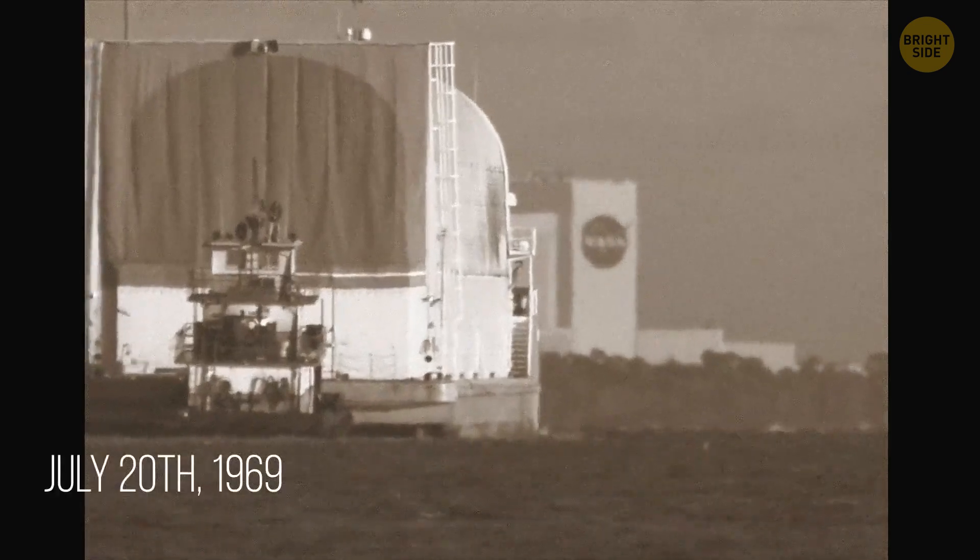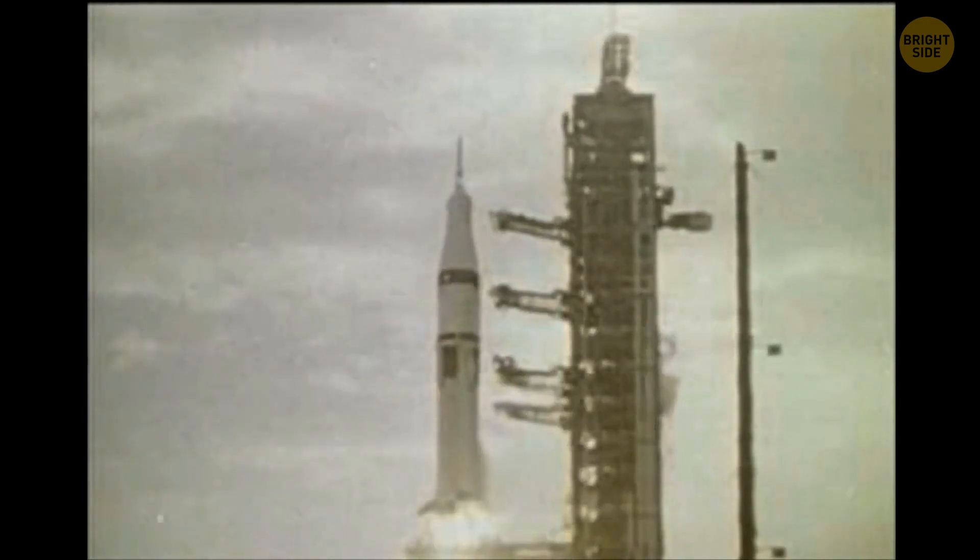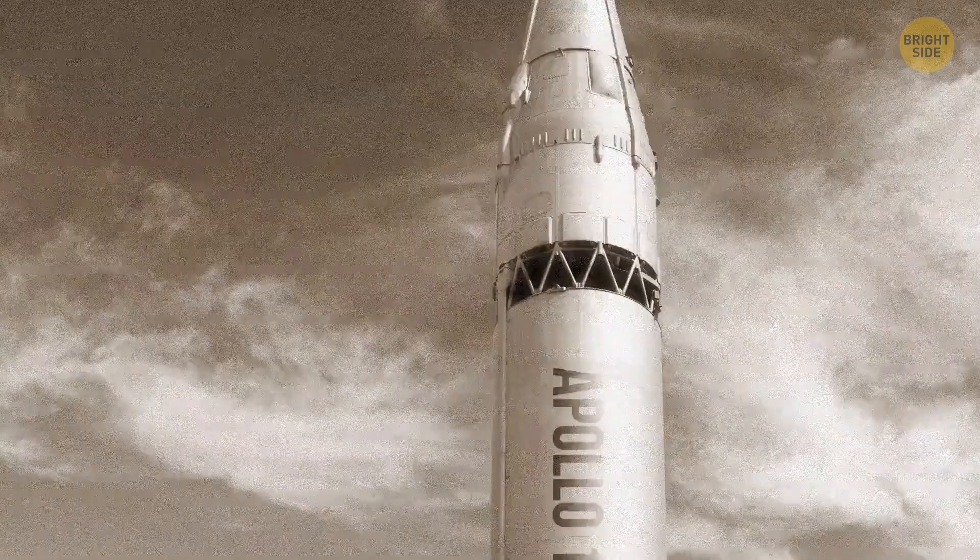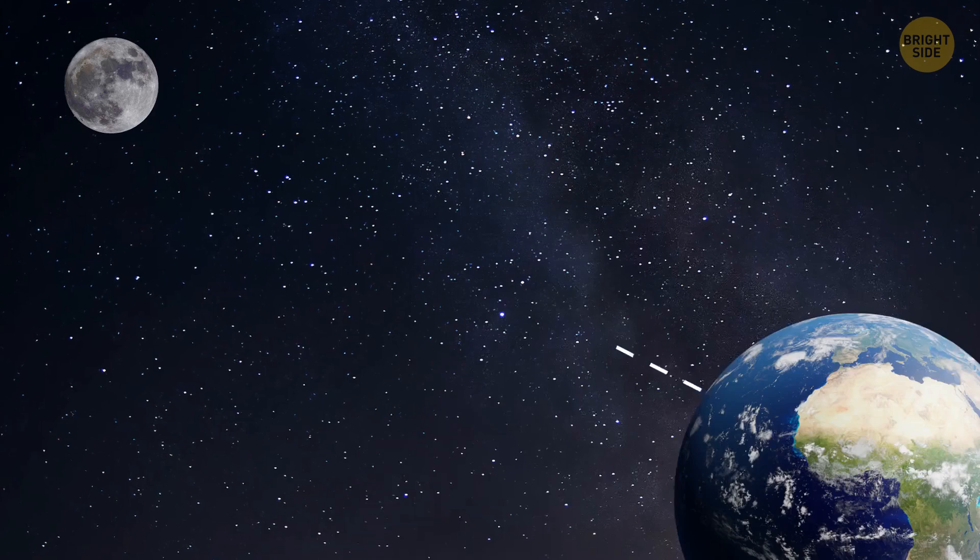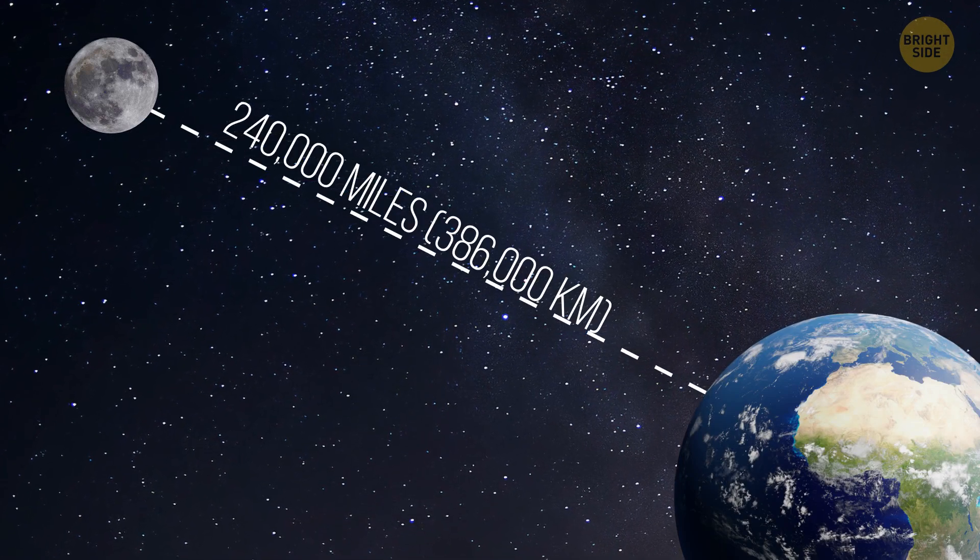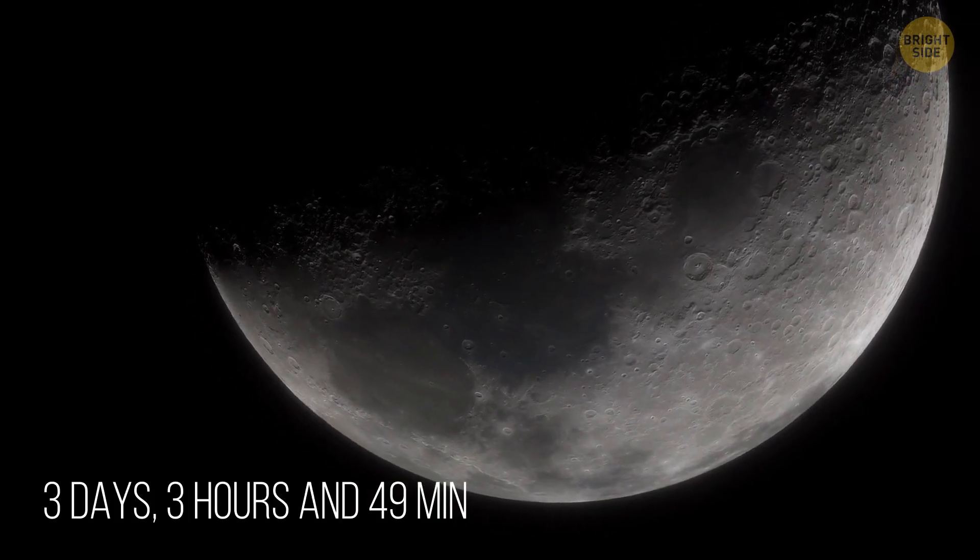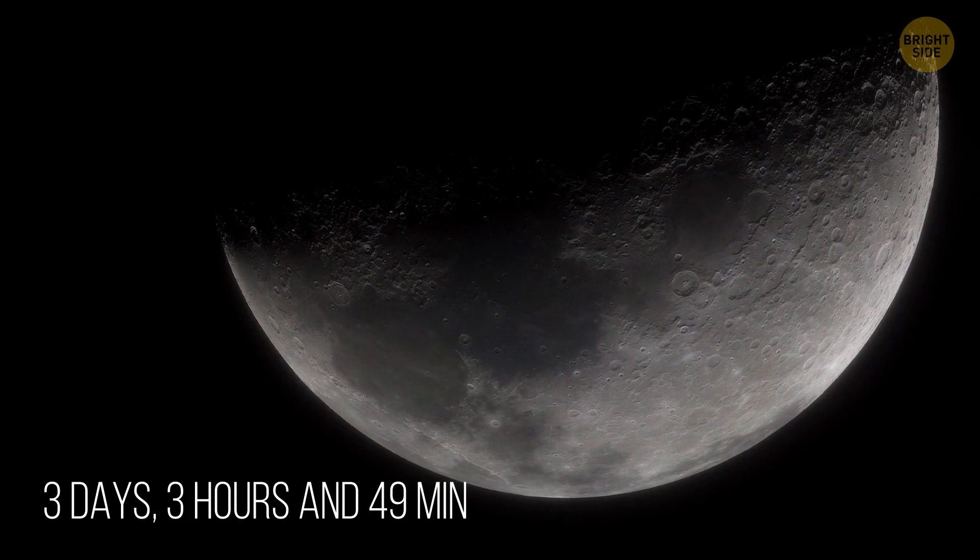It was July 20th, 1969, when Neil Armstrong and his team took off for the moon in the famous Apollo 11 rocket. In total, they had to travel a mind-boggling 240,000 miles. It took them three days, three hours, and 49 minutes to reach the surface of our natural satellite.